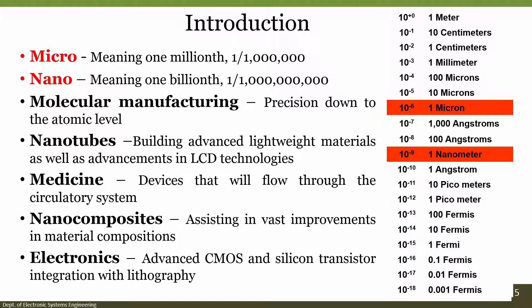Let us come to the actual terminology. The terminology we will use in this course covers micro and nano. Micro means one millionth, or ten to the power minus six. Nano means one billionth, or ten to the power minus nine. Micro and nano technologies are used in several areas from molecular manufacturing to nanotubes, medicine, nano composites, and electronics — whether advanced CMOS silicon transistors or microfabricated devices for applications like pressure sensors.